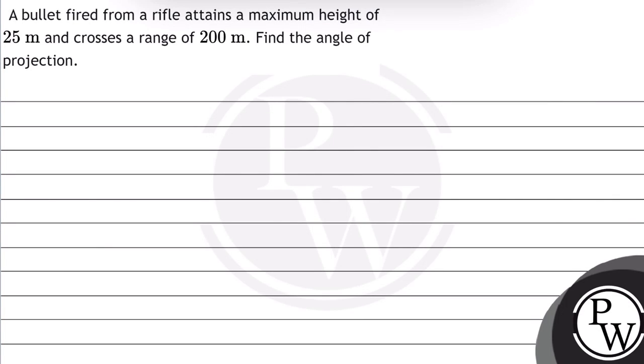Hello, let's read this question. The question says, a bullet fired from a rifle attains a maximum height of 25 meters and crosses a range of 200 meters. Find the angle of projection.